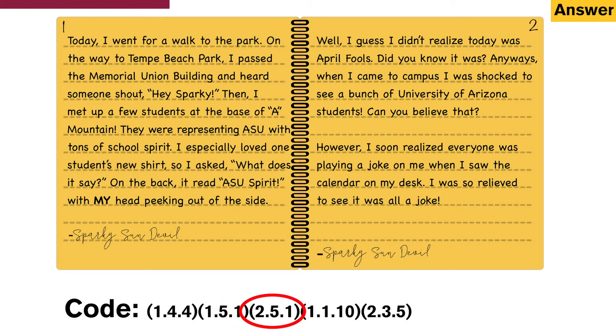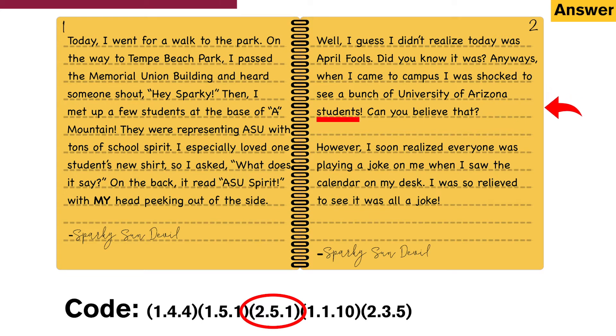Now the third code, 251: second page, fifth line, first word — students.